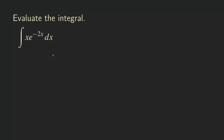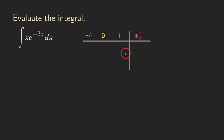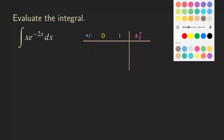We are going to set up a table to do the integration by parts. This table has four columns. The first column is where we are going to alternate in sign. You may ask why we need to alternate the signs here — it's really because of the integration by parts formula.